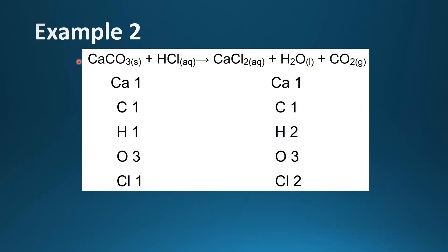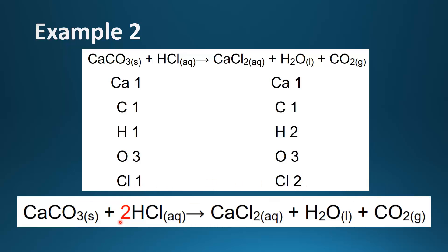Here we have calcium carbonate reacting with hydrochloric acid to form calcium chloride, water, and carbon dioxide gas. If we count up the number of atoms in the reactants and the products, we can see that everything is balanced apart from the hydrogens and the chlorines. I have balanced this equation by adding a 2 in front of the HCl, so we now have the same number of atoms in the reactants and the products.